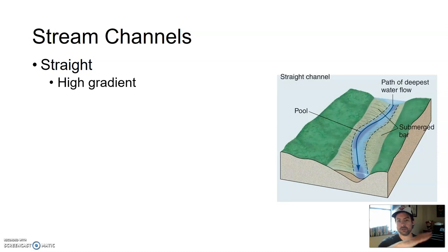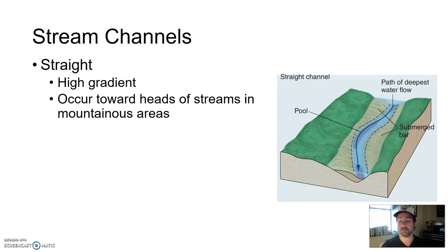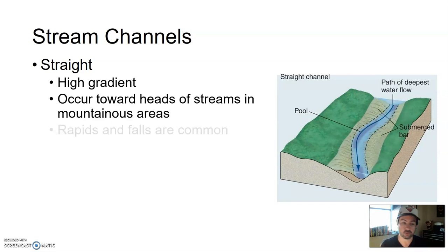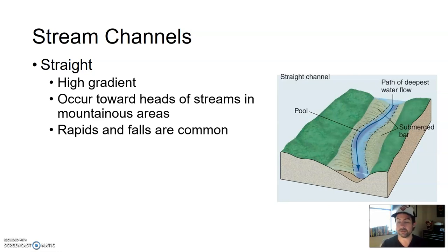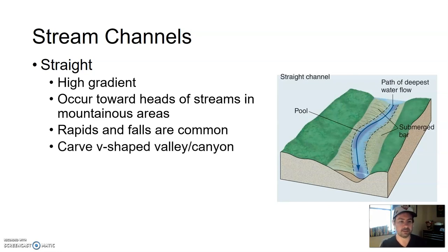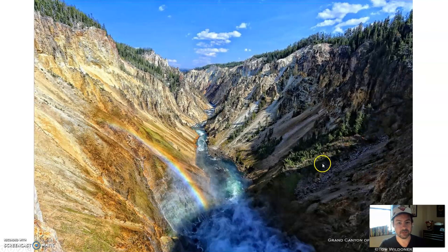Straight stream channels have a high gradient — meaning they are found in very steep areas. These typically occur towards the heads of streams up in mountainous areas, where as snow melts the water moves very fast and creates a very straight stream channel. Rapids and waterfalls are very common along straight stream channels. Because they're moving so fast, they tend to carve V-shaped valleys or canyons.